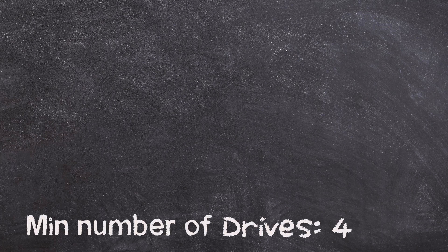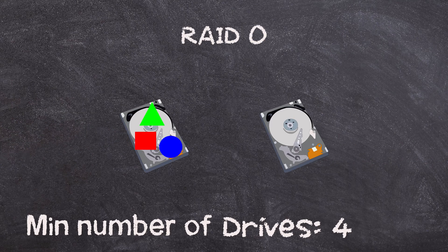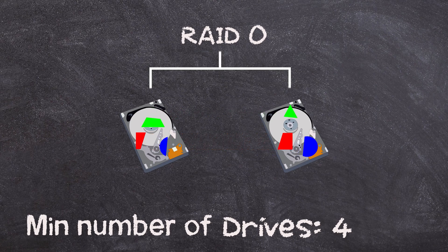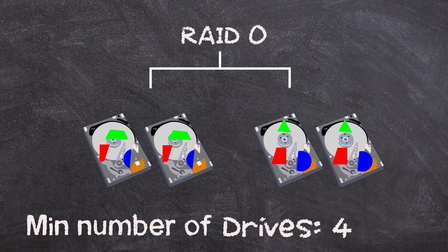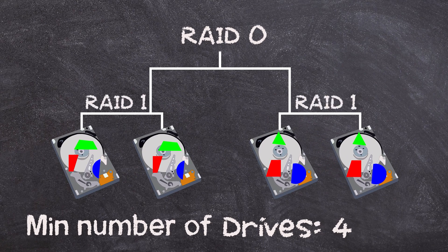Now let's talk about RAID 10. To be clear, RAID 10 is actually RAID 1 plus RAID 0 — a nested array. You need four drives to perform RAID 10. Going back to RAID 0, you have two drives striping data between each other. RAID 10 is essentially that, except both of those drives are now duplicated through mirroring — RAID 1 — giving you RAID 10.